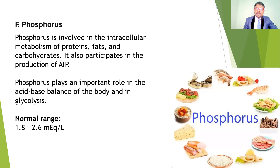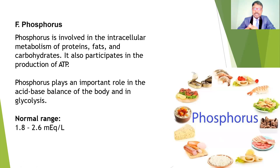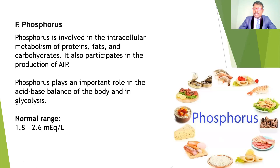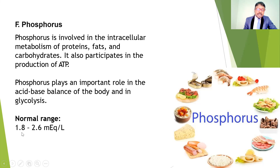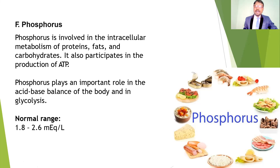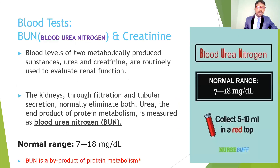Phosphorus is involved in intracellular metabolism of proteins, fats, and carbohydrates, and participates in ATP production during the Krebs cycle. Phosphorus also plays an important role in acid-base balance and glycolysis. Without phosphorus, ATP production is impaired. The normal range is 1.8 to 2.6 mEq/L.